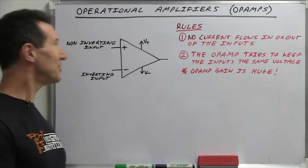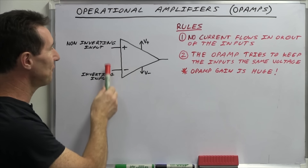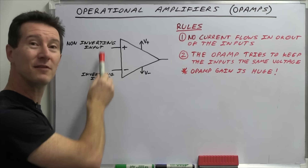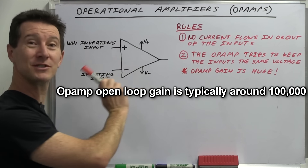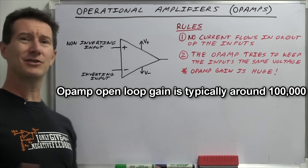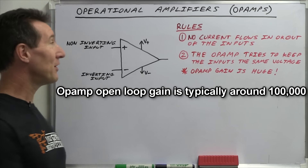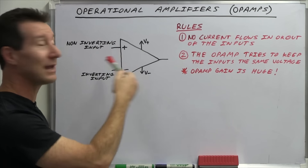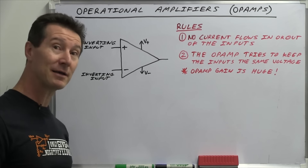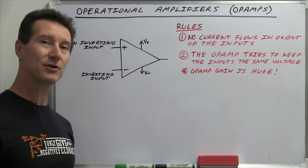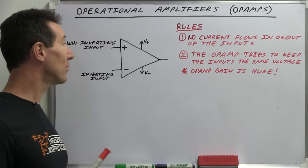So if we just tried to use an op amp with no external circuitry, and just fed like one millivolt on the input, the gain is so large that the output voltage is going to be so huge that it's just not a practical device at all. That's why you never see an op amp without any external circuitry, or what's called negative feedback. So that brings us to our first practical application for the op amp, which is a comparator.